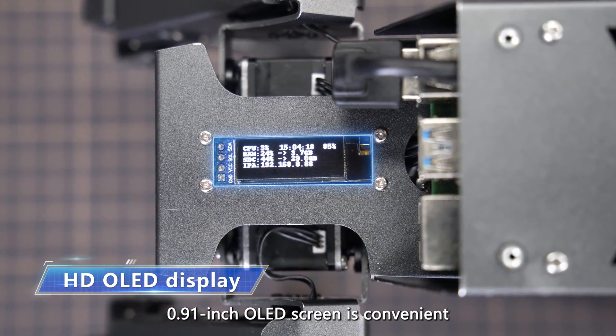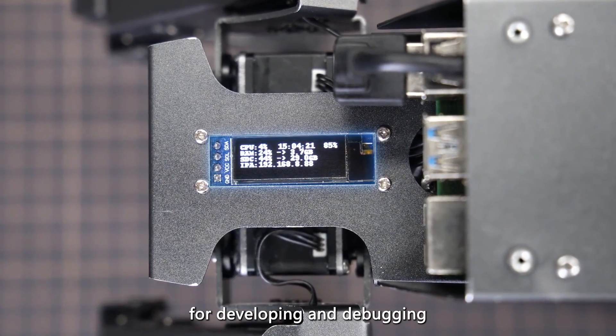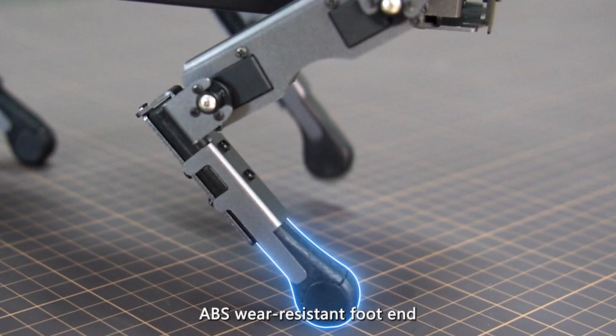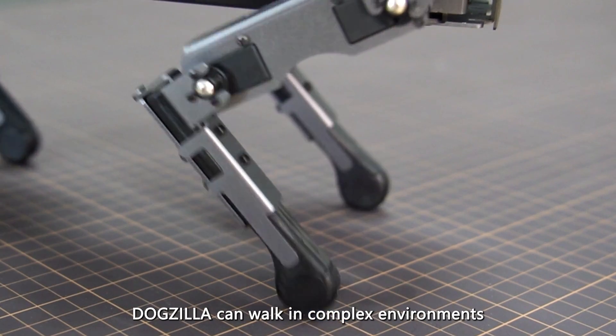A 0.91 inch OLED screen is convenient for developing and debugging. With silicone foot pads and ABS wear-resistant foot ends, Dogzilla can walk in complex environments.